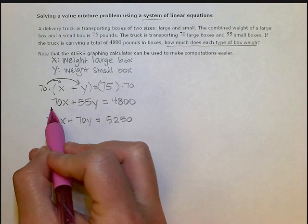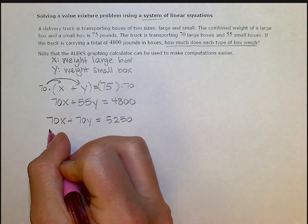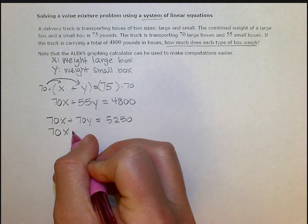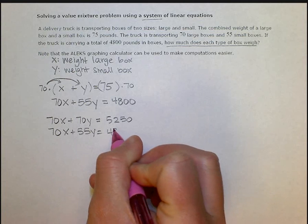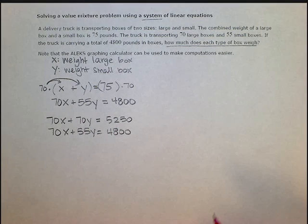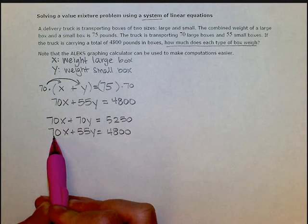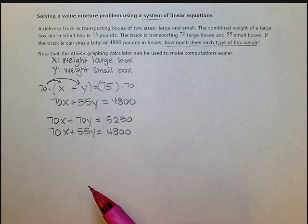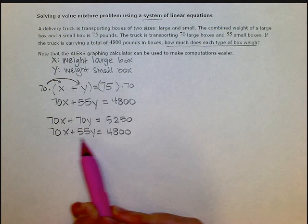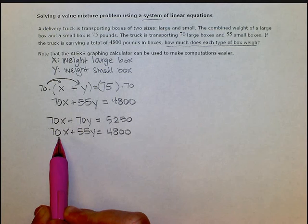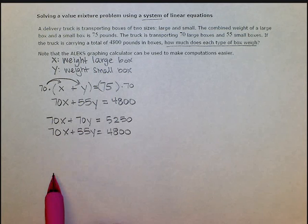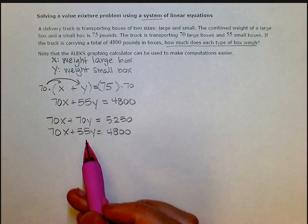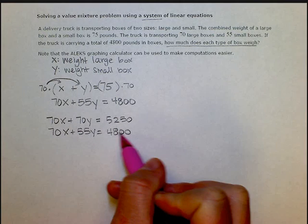And I'm just going to rewrite my second one again because I haven't changed it at all. So there's my new system. Now my coefficients on the x are the same. But they can't eliminate yet, because if I added these two equations right now, I would get 140x. They wouldn't cancel out. So I need one of these 70x's to be negative, so they cancel each other out. So I'm going to make my bottom equation negative.